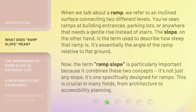When we talk about a ramp, we refer to an inclined surface connecting two different levels. You've seen ramps at building entrances, parking lots, or anywhere that needs a gentle rise instead of stairs. The slope, on the other hand, is the term used to describe how steep that ramp is. It's essentially the angle of the ramp relative to flat ground.